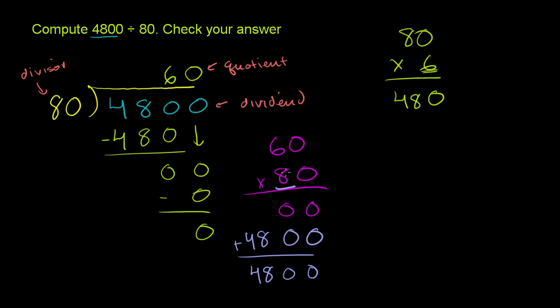A faster way would have just been to say 8 times 6 is 48. And you have 1, 2 0's here. So 1, 2 0's right there.